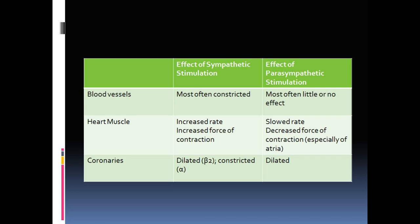Most blood vessels are supplied only by the sympathetic nervous system, with very little parasympathetic supply. The sympathetic system most often causes vasoconstriction via alpha receptors. Beta receptors, when stimulated, can cause vasodilation. So both constriction and dilation are due to sympathetic stimulation — alpha receptors cause constriction (the major effect); if alpha is suppressed by a drug and beta acts, vasodilation occurs through beta adrenergic receptors.